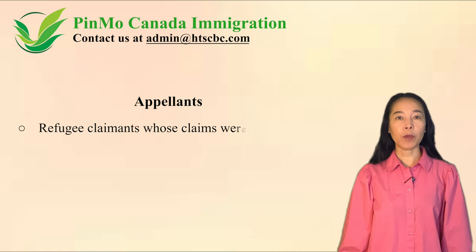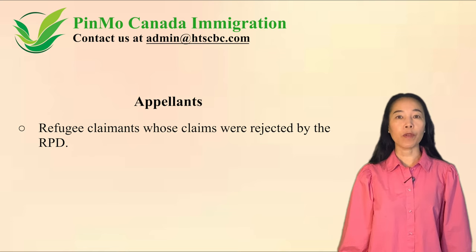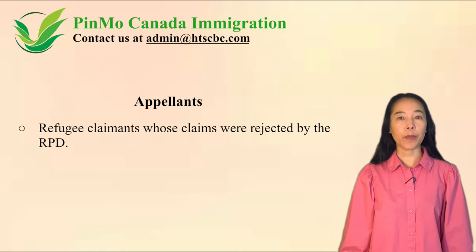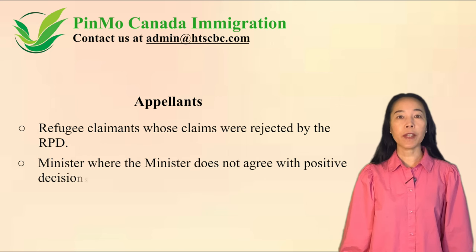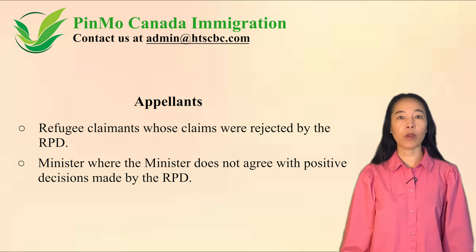A refugee appeal may be made either by a refugee claimant whose refugee claim was refused by the Refugee Protection Division, or the minister, where the minister does not agree with a positive decision by the RPD to confirm refugee protection to a claimant.